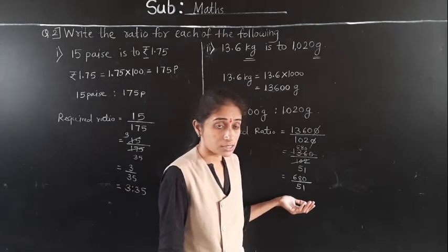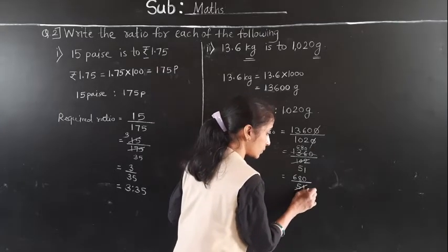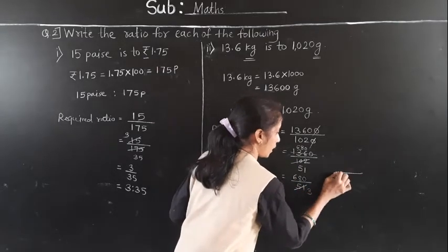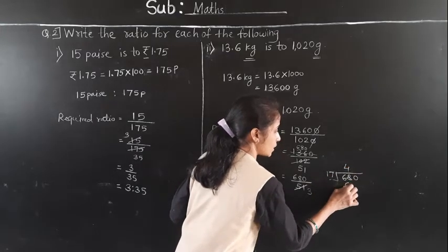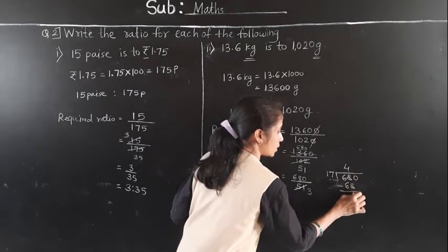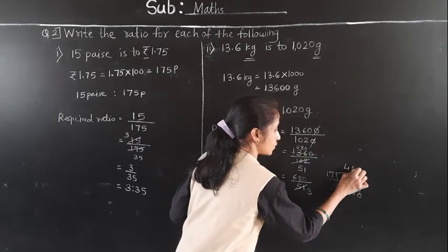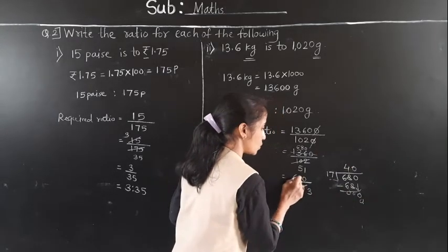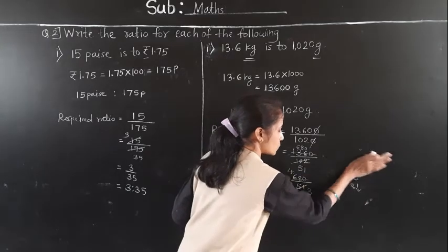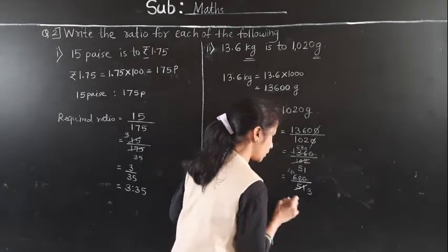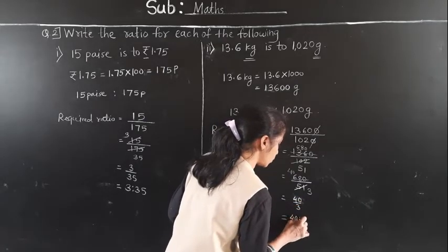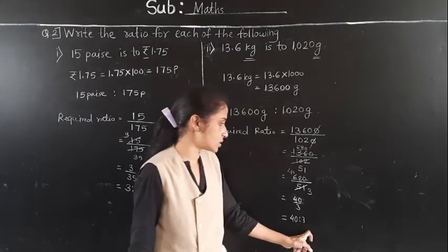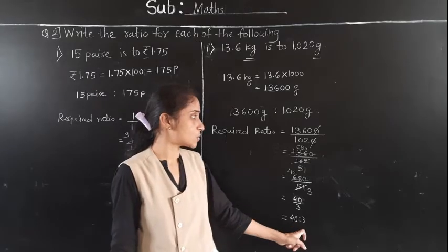Both numbers divided by 17 give 40 upon 3. So the ratio is 40 to 3.